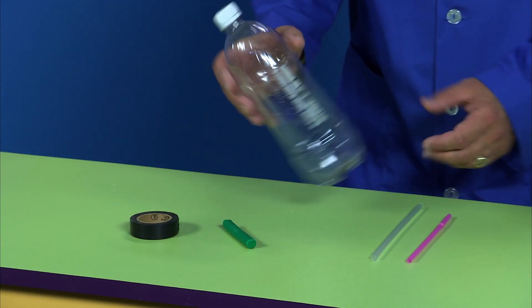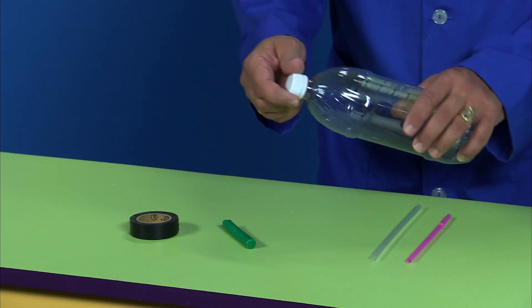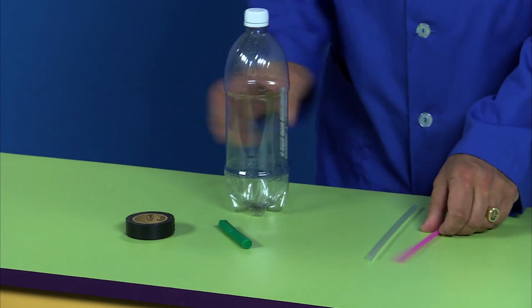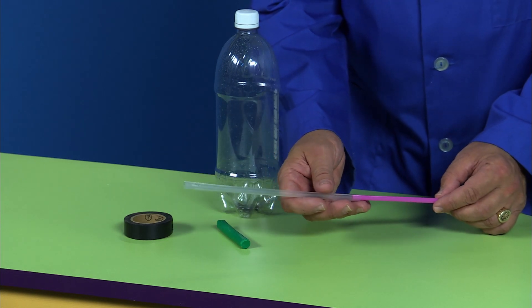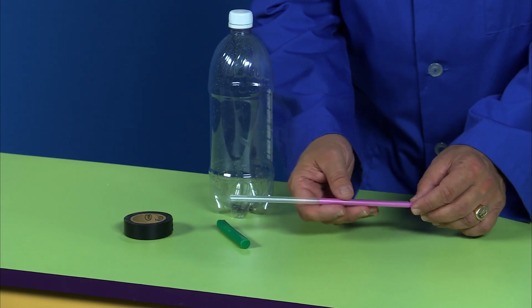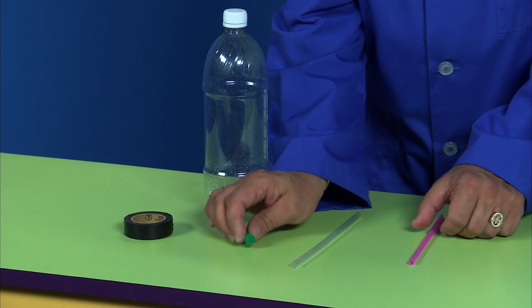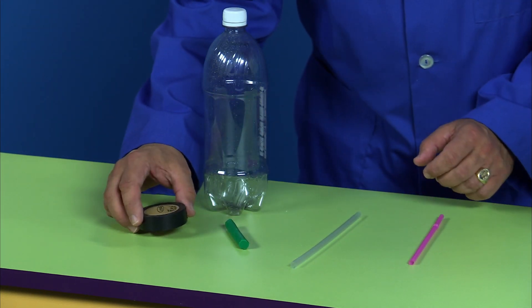To make your bottle rocket all you need is a plastic bottle with a cap, two straws, and the straws have to be different sizes so one fits inside the other like this. And then you need some modeling clay and some tape.